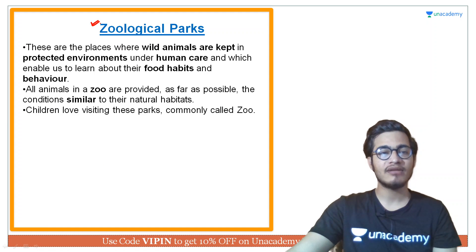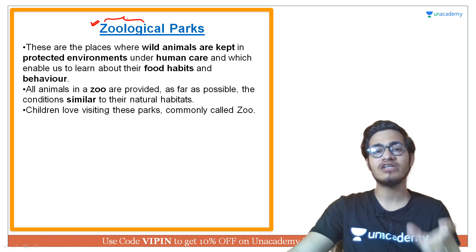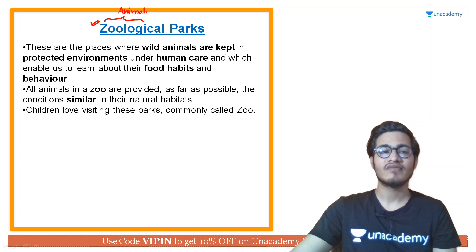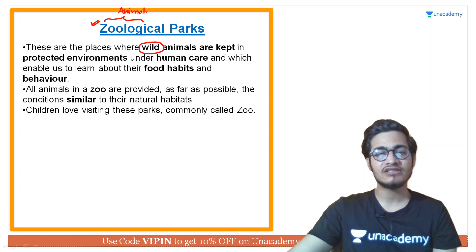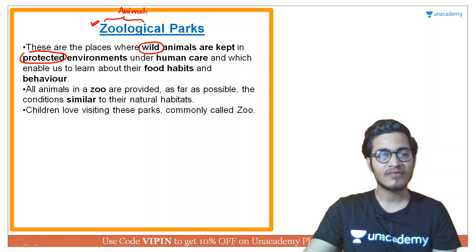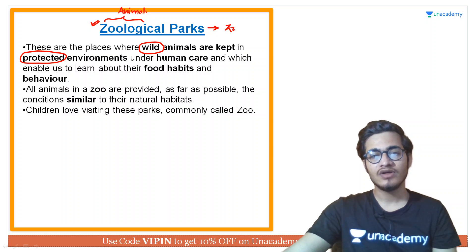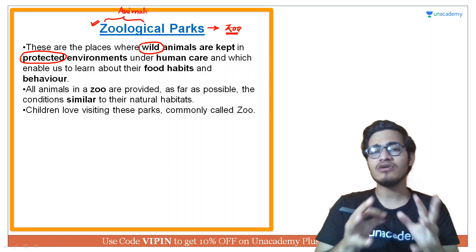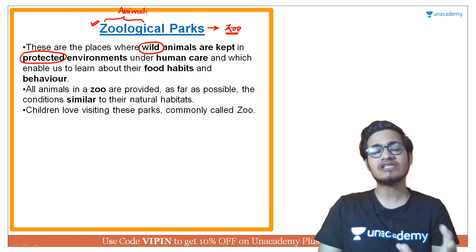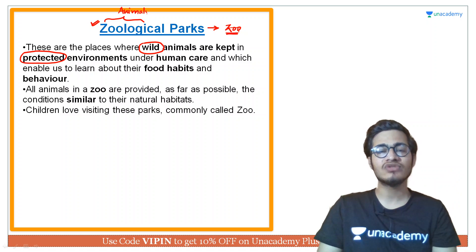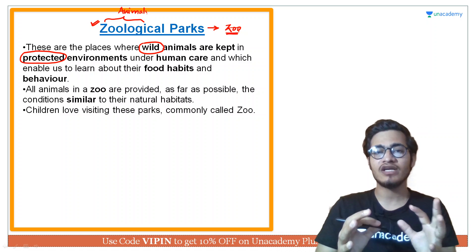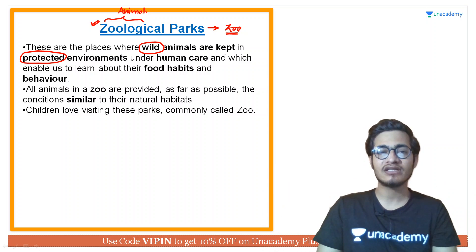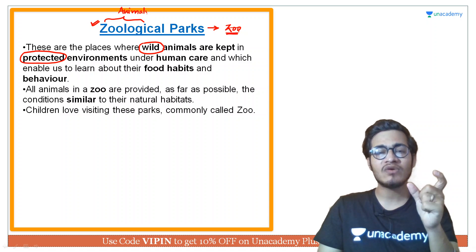Let's start our discussion on zoological parks. As already mentioned, the word 'zoology' is present in the name, which means zoological parks are for animals, not for anything else. These are the places where wild animals are kept in protected environments — you lovingly call them 'zoo'. Zoos can be found even in congested cities; for example, in a city as congested as Lucknow you can find a zoo. This means zoological parks can be quite congested in terms of area.